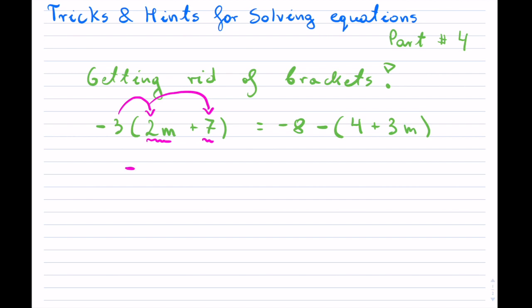So negative three times the two is negative six m, and negative three times the seven is negative 21. So that gets rid of this bracket on the left-hand side. And on the right-hand side, notice the negative eight, so that's just negative eight.